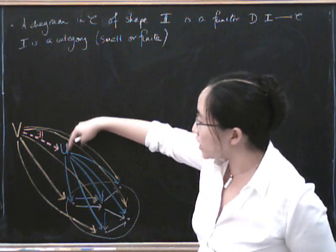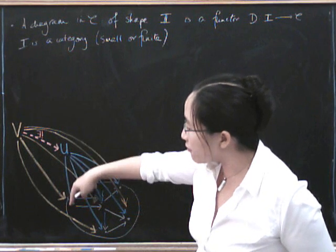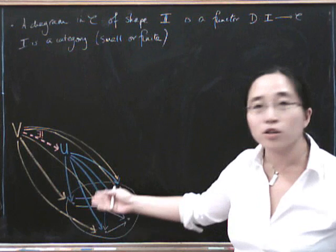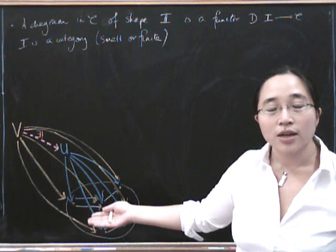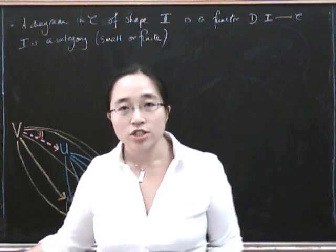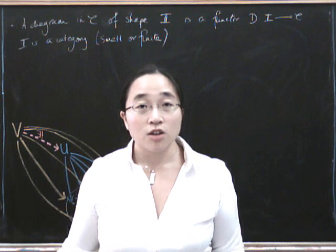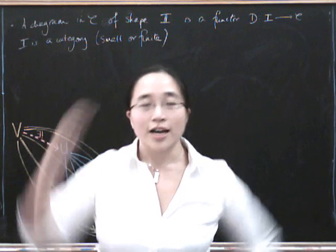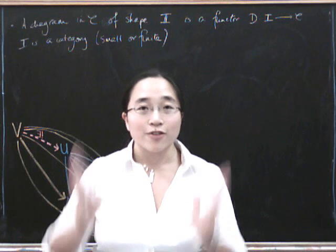It's an object U equipped with a morphism from U to every object in the diagram such that a whole load of triangles commute. Now, a natural transformation is a bunch of morphisms such that a whole load of squares commute. And you might think, hmm, a square is a triangle. Except that a square is a triangle if you just collapse it a bit.